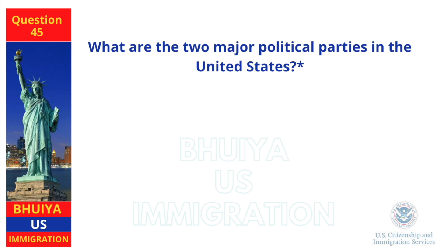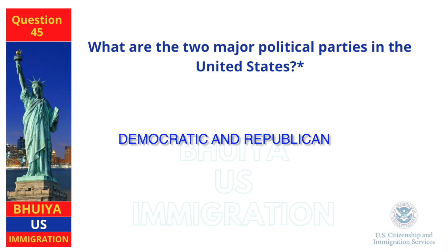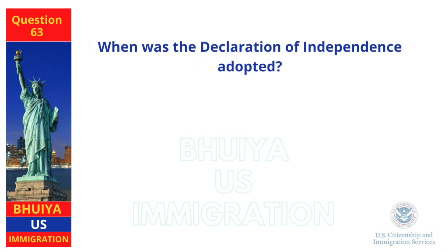What are the two major political parties in the United States? Democratic and Republican. When was the Declaration of Independence adopted? July 4, 1776.